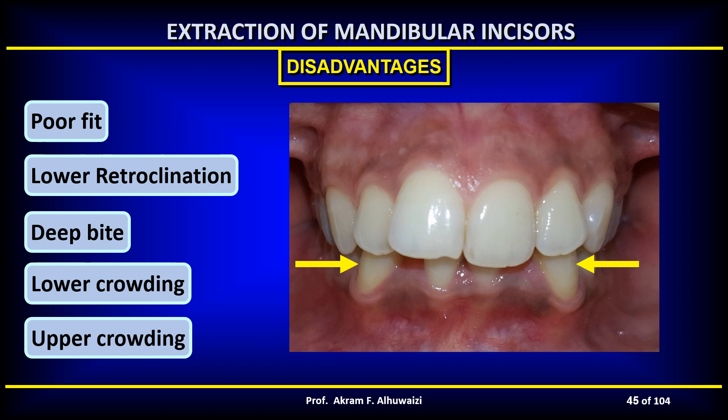Although crowding may be relieved in the short term, forward movement of the molars can eventually lead to crowding returning in the lower incisors. Additionally, the lower intercanine width decreases because of the extraction, and this causes a secondary reduction in the upper intercanine width with crowding in the upper labial segment appearing later in life.